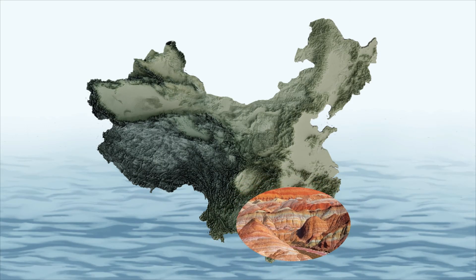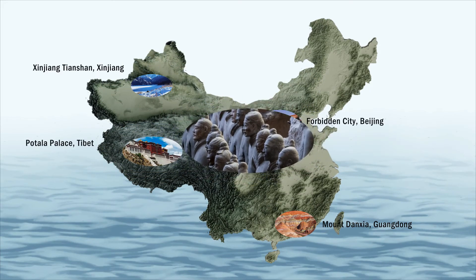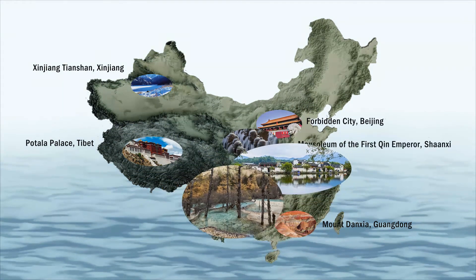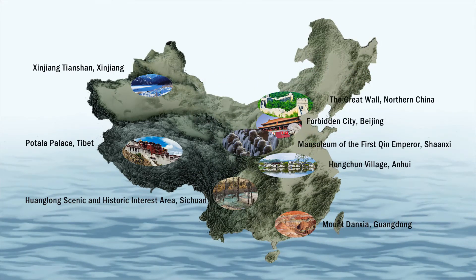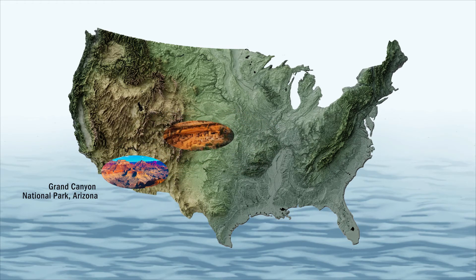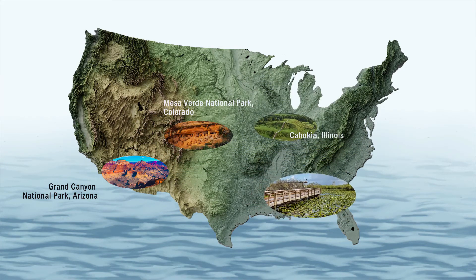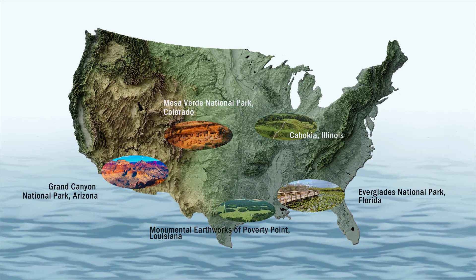China has 55 World Heritage Sites to date — 37 cultural heritage sites, 14 natural heritage sites, and 4 cultural and natural mixed sites — ranking first in the world. There are 24 World Heritage Sites in the United States, including 12 natural heritage sites, 1 cultural and natural mixed site, and 11 cultural heritage sites. China has a clear advantage in cultural heritage, and a land exchange would cause huge losses in this area.